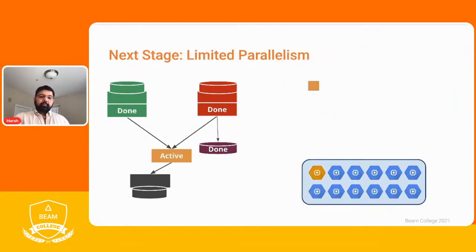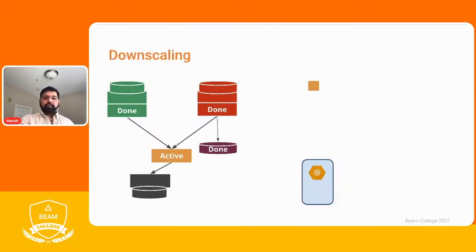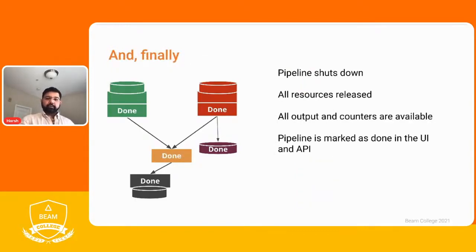Similarly, if all the green, red, and purple stages are done and the yellow stage is active but small — only one work item that cannot be split, perhaps because it's a single key or a compressed file — then only one VM can execute it and the remaining 11 VMs are idle. In this case, Dataflow will downscale these VMs so the user is not wasting money. Finally, when all stages are done, the pipeline shuts down, all resources are released, output counters are available, and the pipeline is marked done in the API. This is how Dataflow specifically uses the portability framework and built-in features to specialize and make Beam execution better, faster, and provide a better price-to-performance ratio.